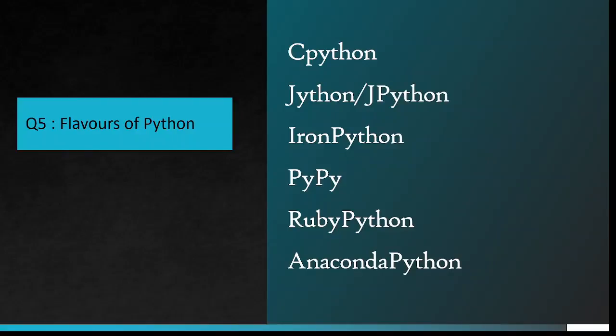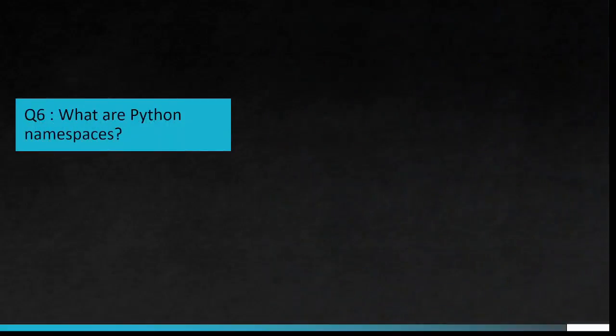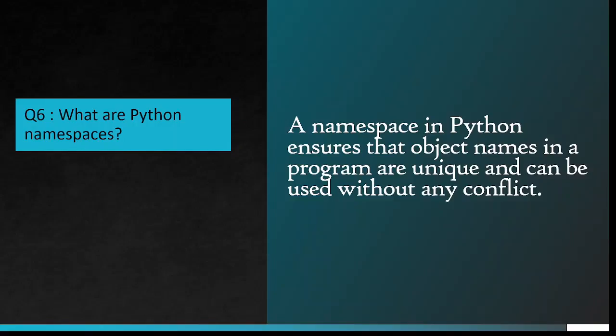Question number 5: Flavors of Python. CPython, Jython or JPython, IronPython, PyPy, RubyPython, Anaconda Python. Question number 6: What are Python namespaces? A namespace in Python ensures that object names in a program are unique and can be used without any conflict.